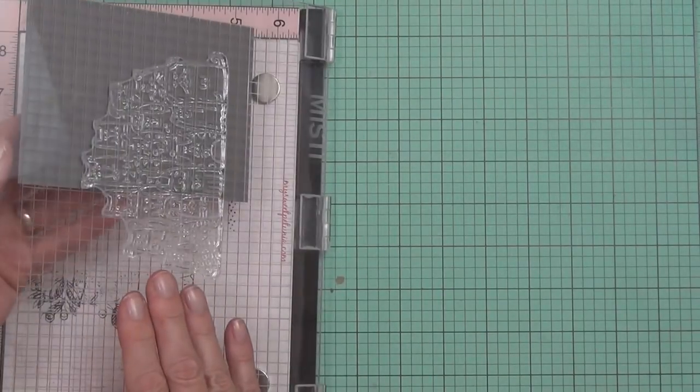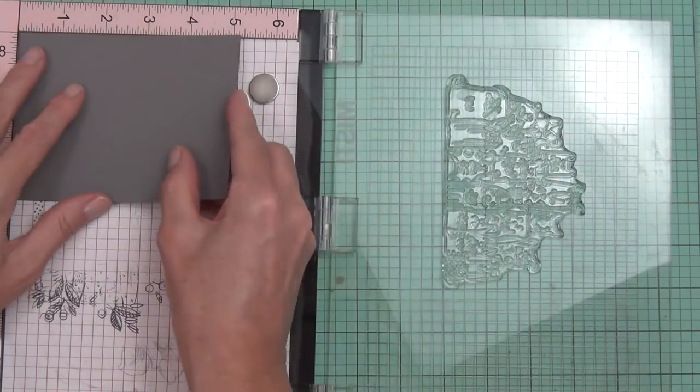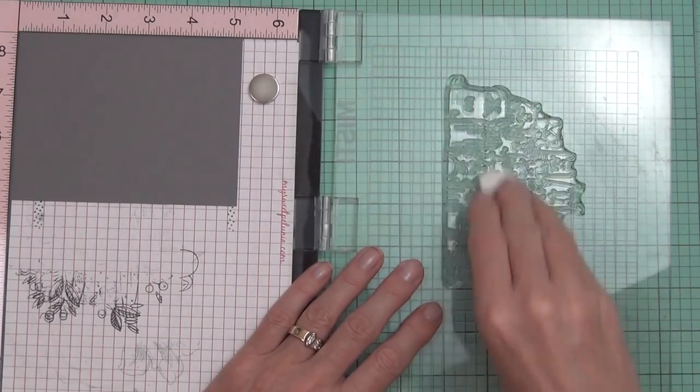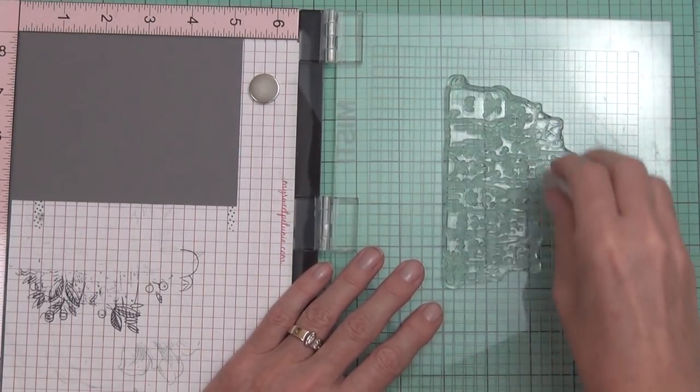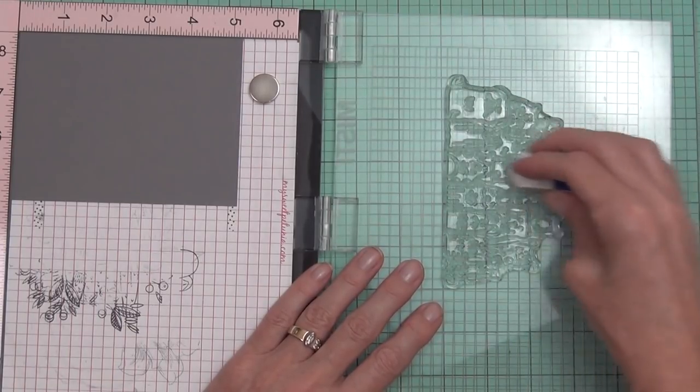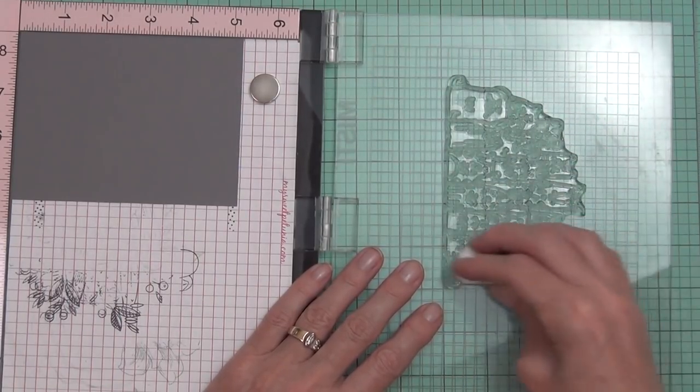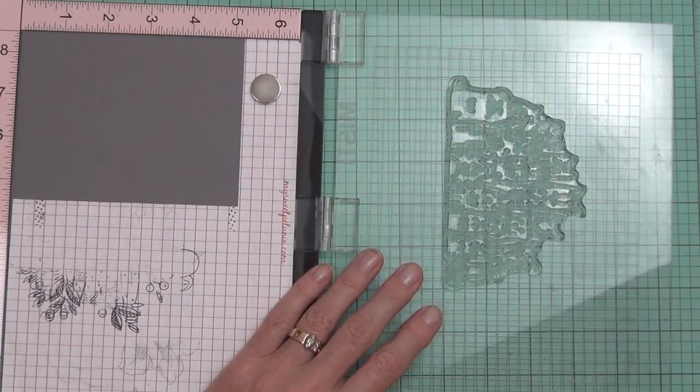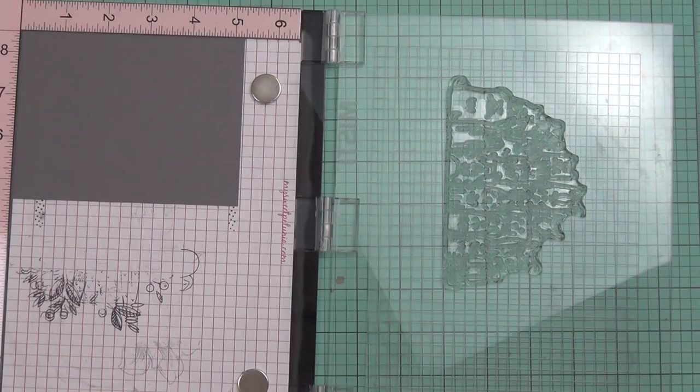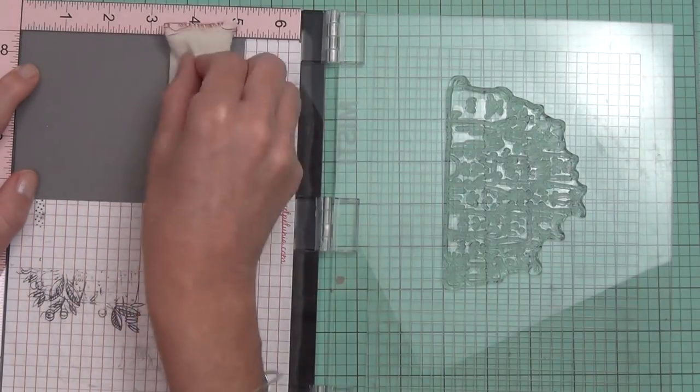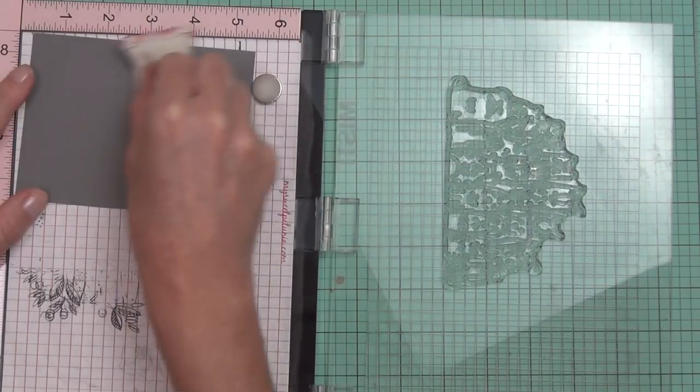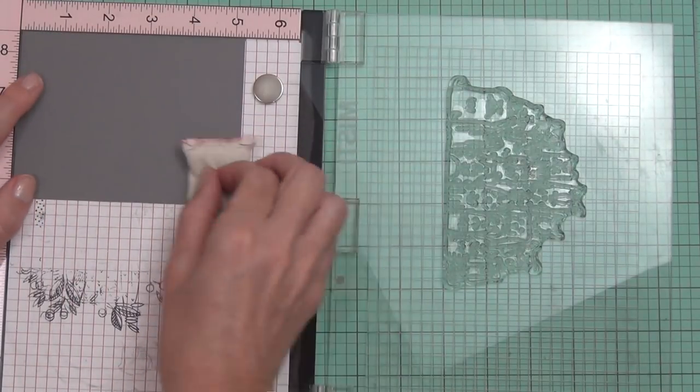In typical Cards for Men style, I'm doing a nice clean and simple design today. This is a new stamp and it's quite large, so I'm using my Misti to help me get a good impression. I'm also wiping lightly over the top of the stamp with an eraser to condition it and help the ink adhere evenly.